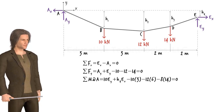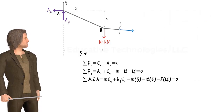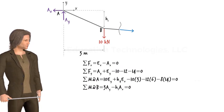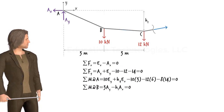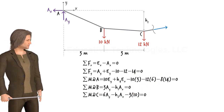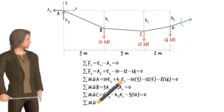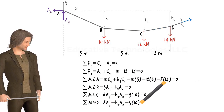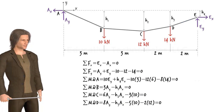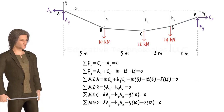For joint B, if we cut the cable in segment BC, summing the moments about the joint gives us one equation. For joint C, the moment equilibrium equation can be written similarly, and for joint D we can write another. As you can see, for this cable system we have six equilibrium equations. Therefore, we can calculate up to six unknowns.